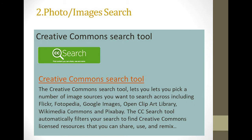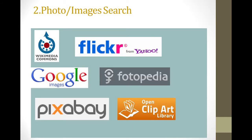The second search type is Photo and Images. Number 4: Creative Commons Search Tools for images let you pick from a number of image sources to search across, which includes Flickr, Photopedia, Google Image Search, Open Clip Art Library, Wikimedia Commons, and Pixabay. The tool automatically filters your search to find Creative Commons licensed resources that you can share, use, and remix.